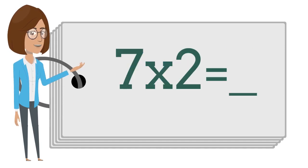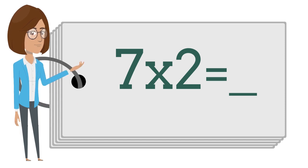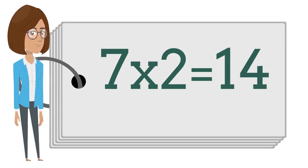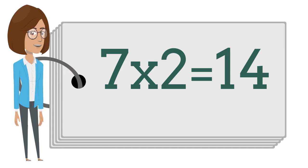Seven times two is — say the answer out loud. Seven times two is fourteen.